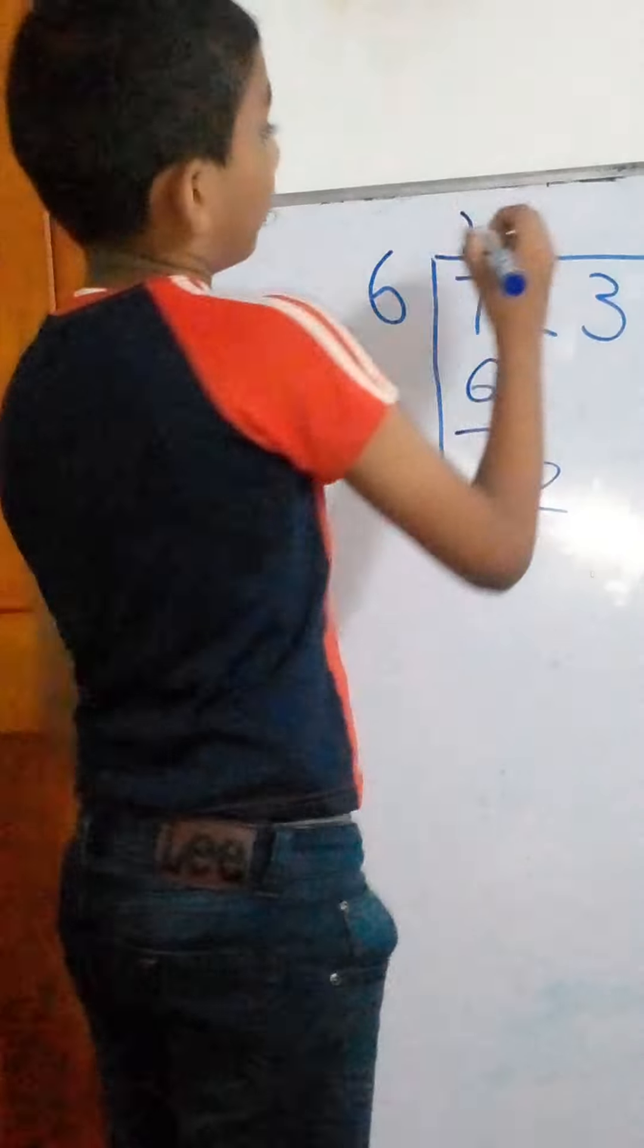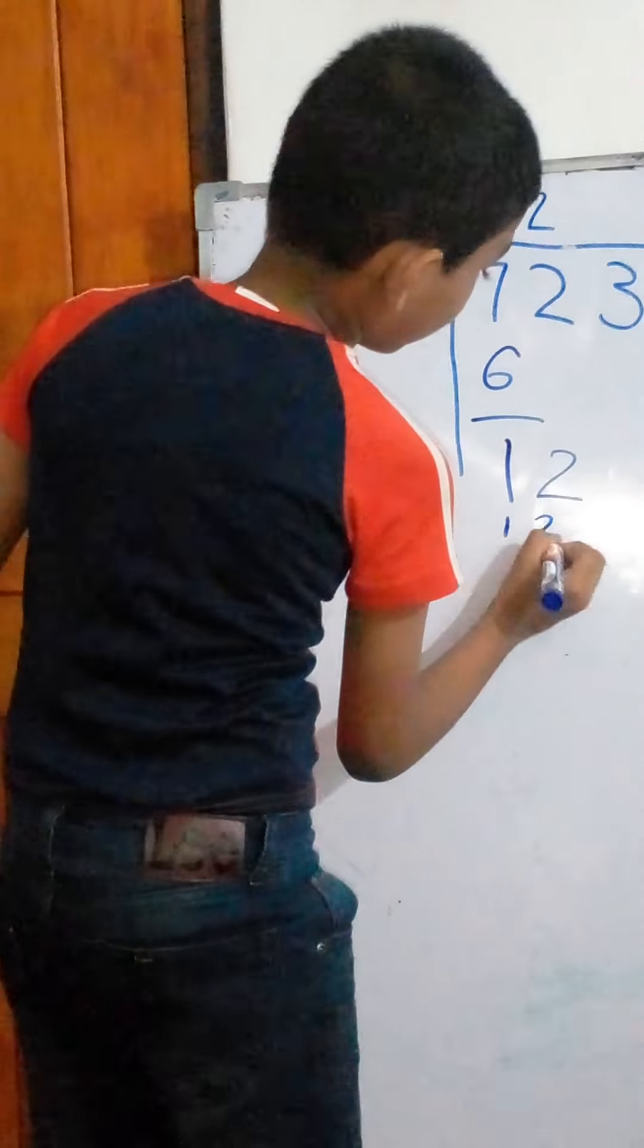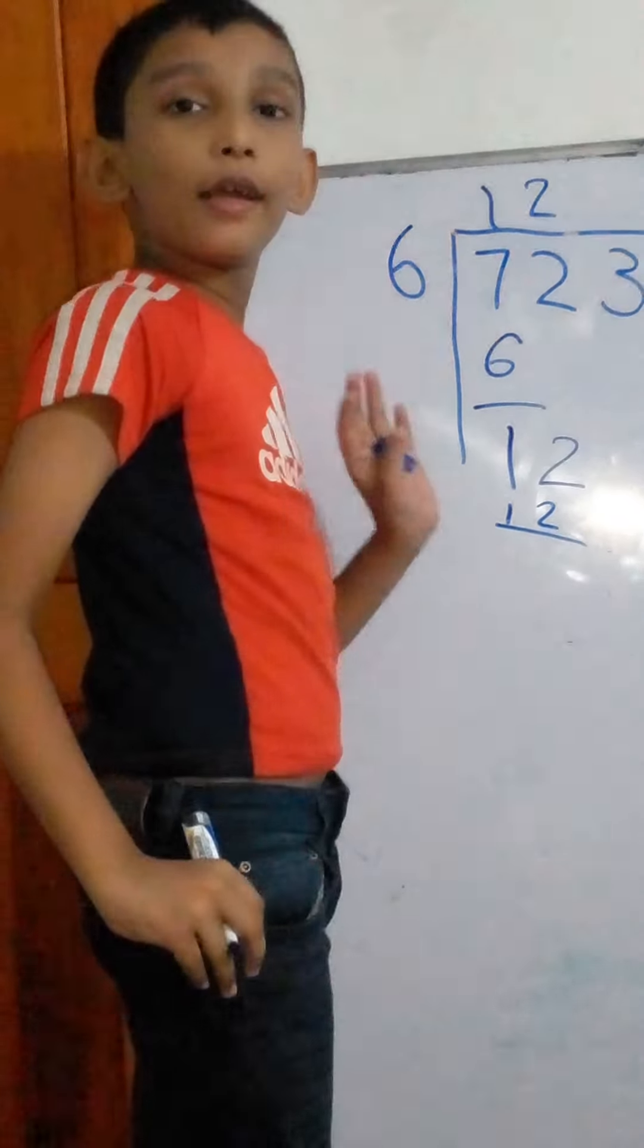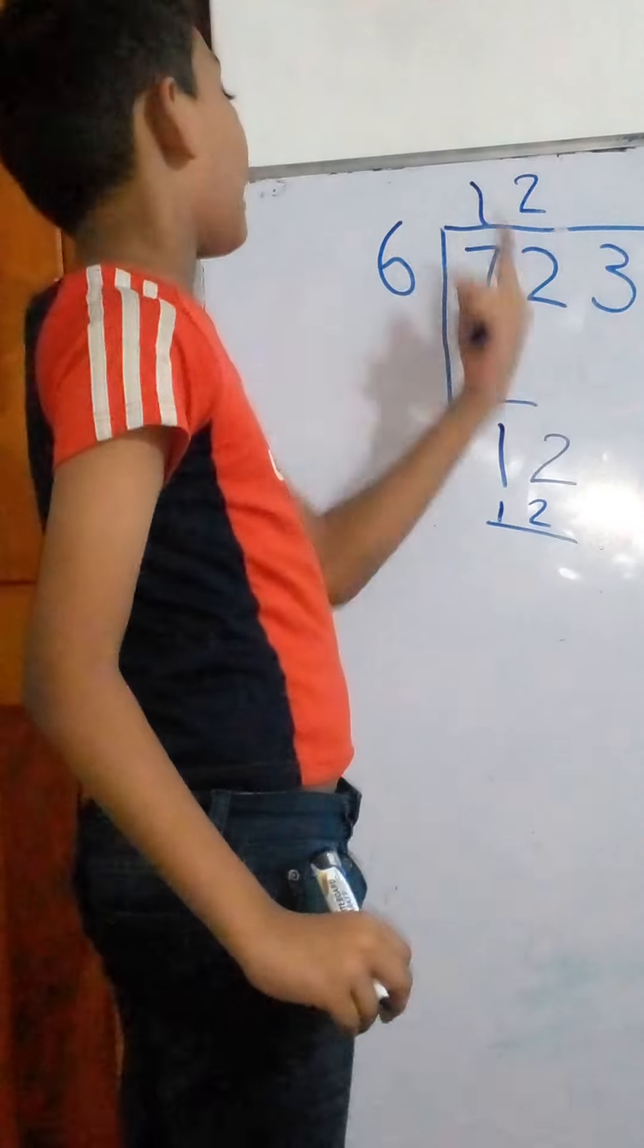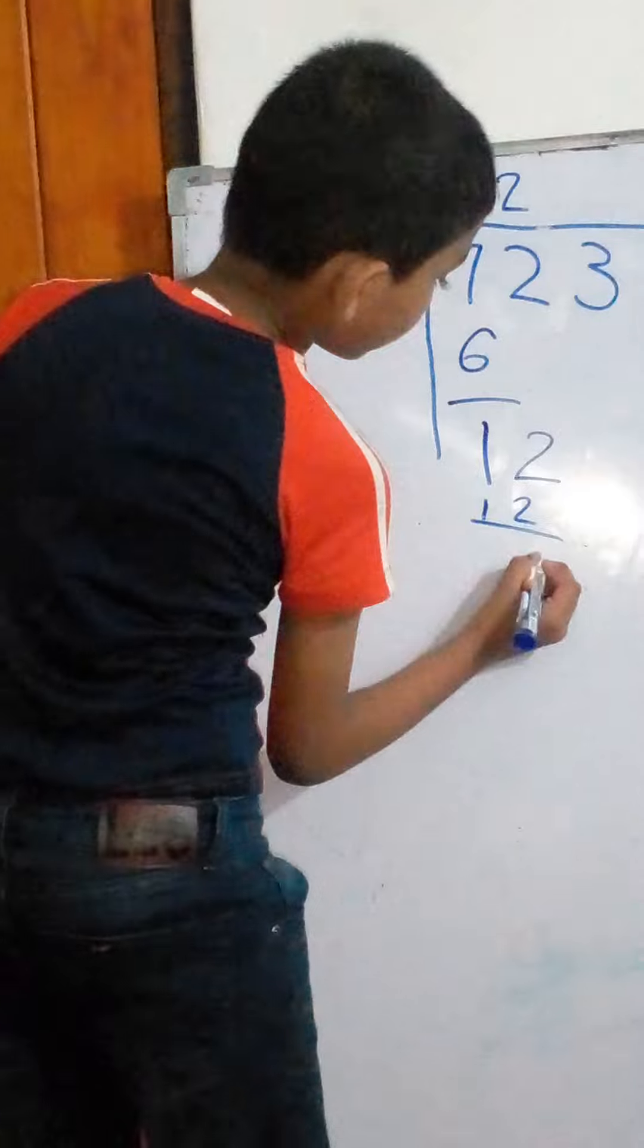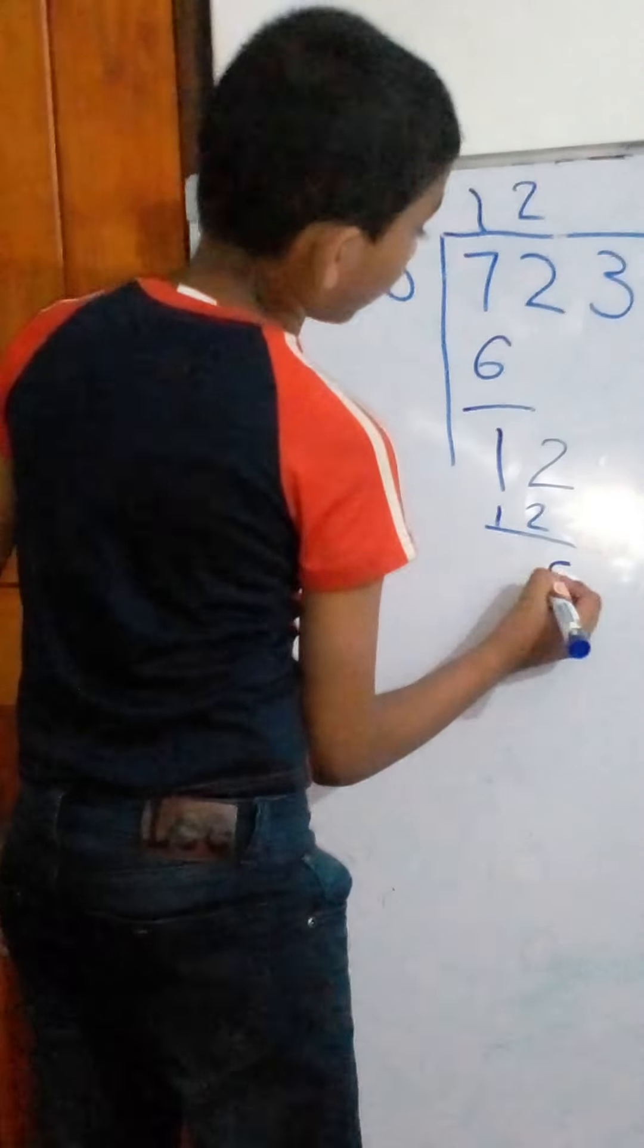Two. Two times six. And two times six is twelve. Twelve minus twelve is zero.